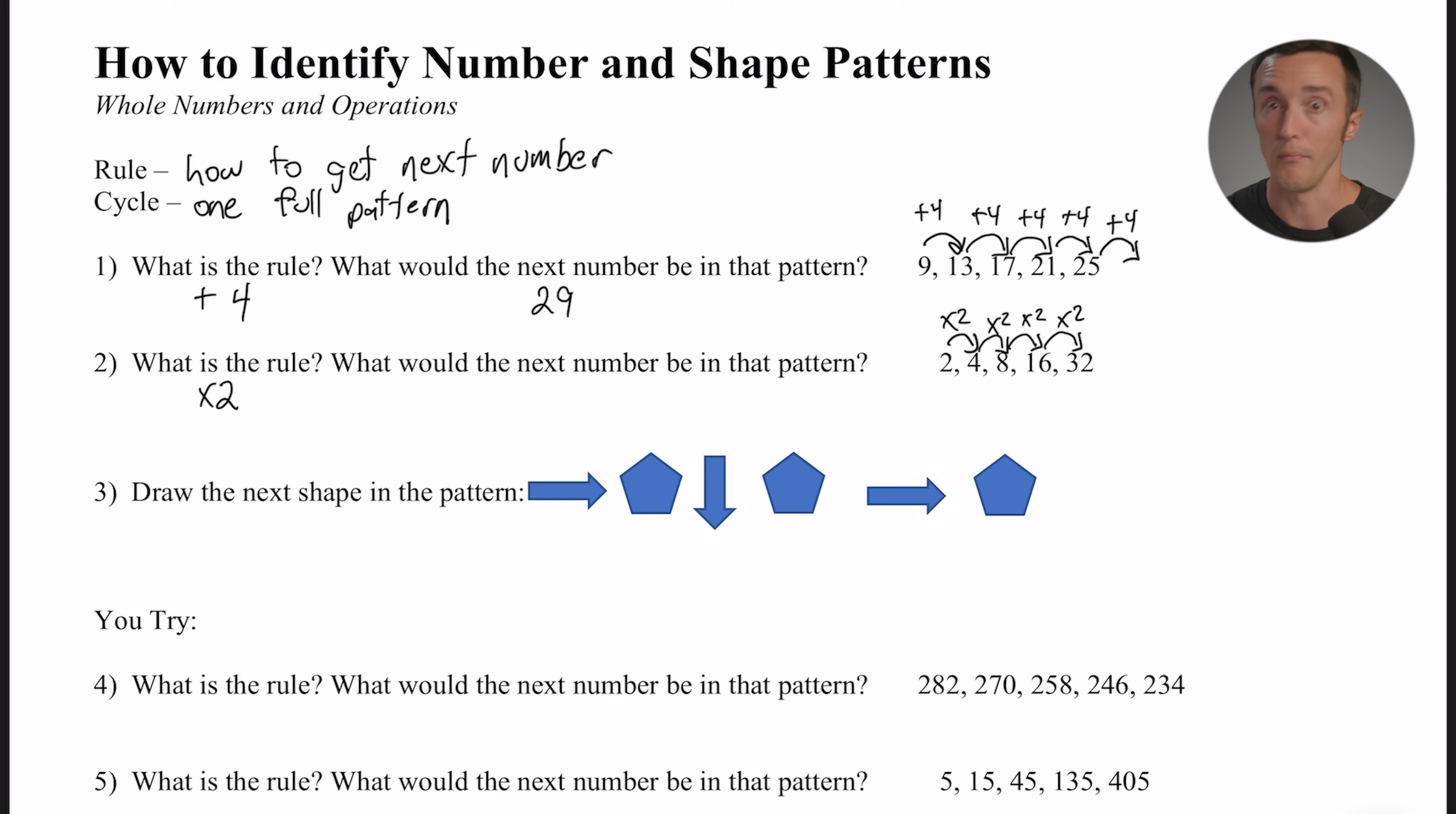Okay, so the rule here is we're going to multiply by 2. That's our rule, and that can help us get any number of numbers in the sequence. So what would the next number be in that pattern? Well, 32 was the last number. If we multiply that by 2, we would get 64.